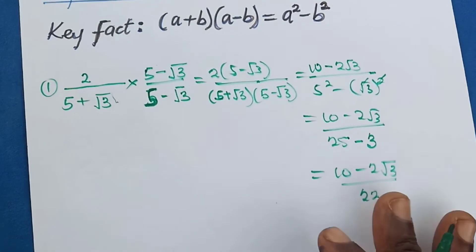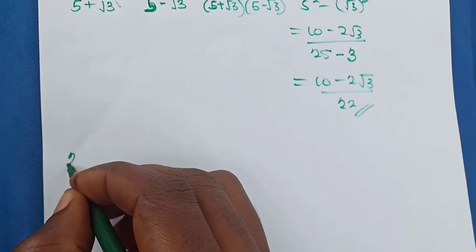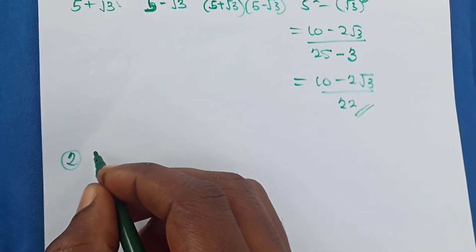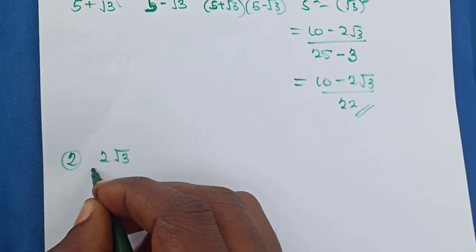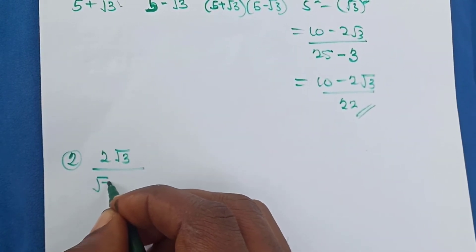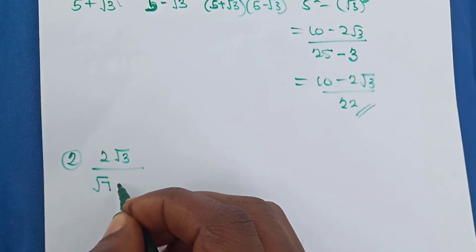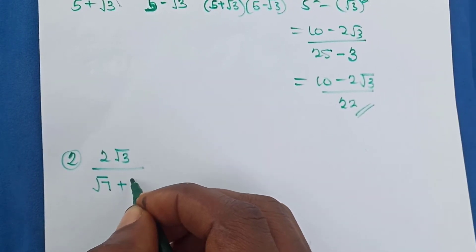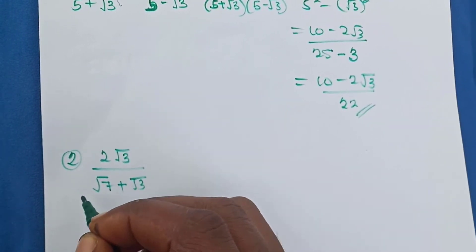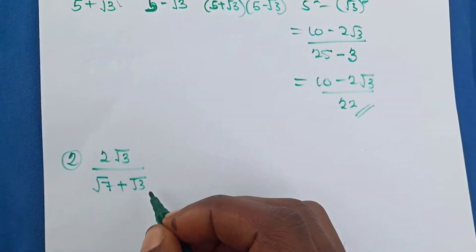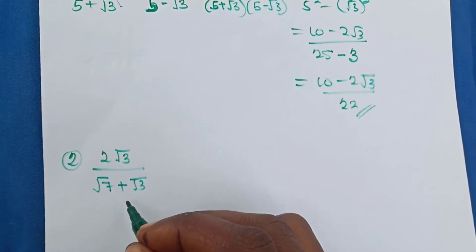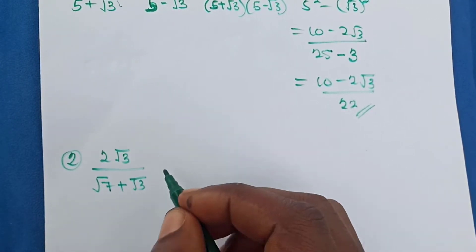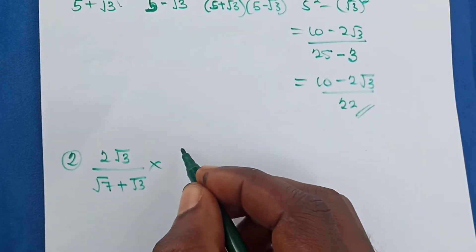Let's look at the second example. Assuming we have 2√3 over (√7 + √3), we have to multiply both the numerator and the denominator by the conjugate of the denominator. The conjugate of this denominator will be (√7 minus √3).